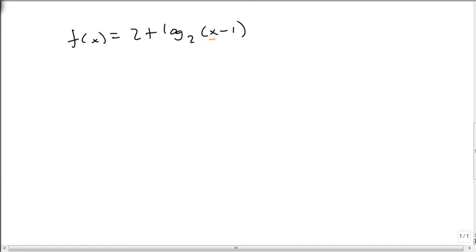So here we have something in parentheses which gives us an h value. Remember, we change the sign for the h. So the h is 1. Here's our k is 2. And so we're going to have a reference point at 1, 2.